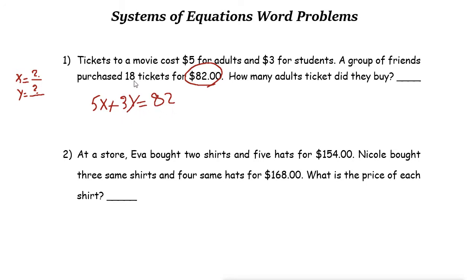But we know another thing: 18 tickets means that the number of adults plus number of students is 18. Now we have a system of equations we can solve using different methods, but the easiest way to solve them is using the elimination method. Let's multiply the second equation by negative 3 to remove Y. So if you multiply everything by negative 3, it becomes negative 3X minus 3Y equals negative 54.